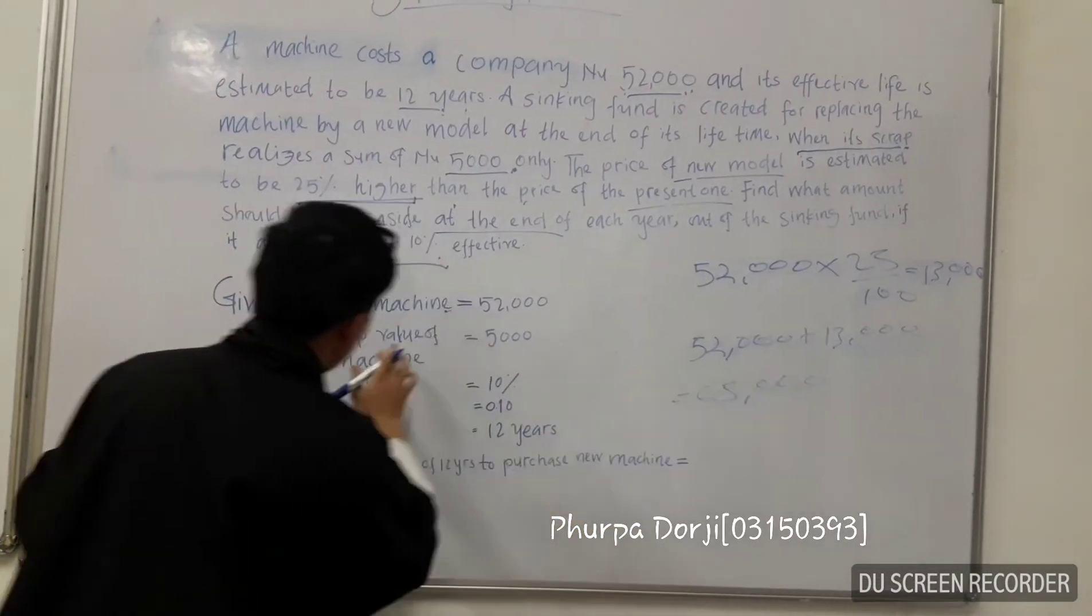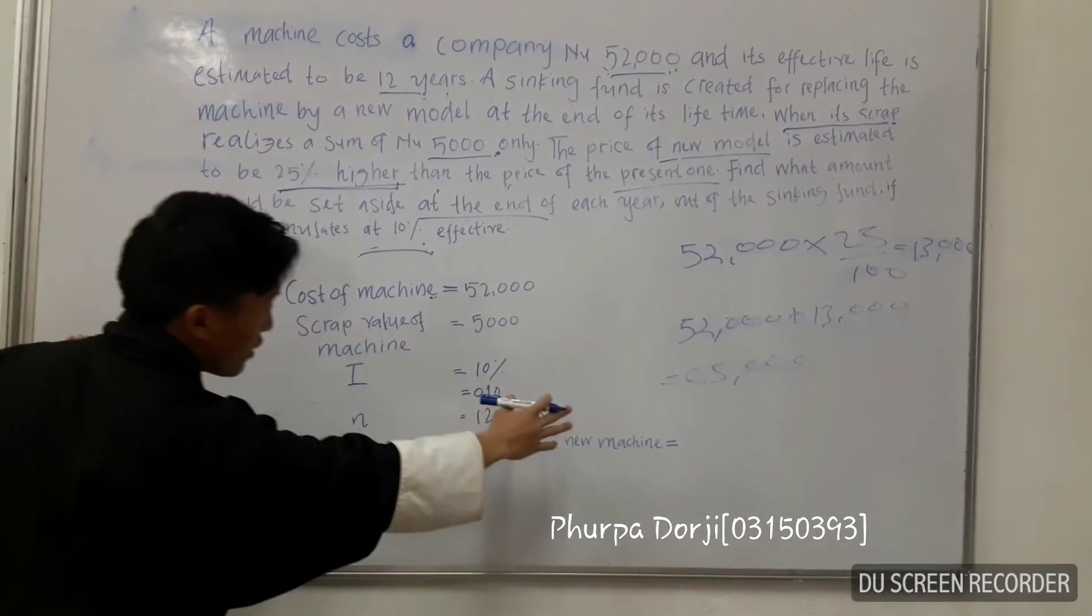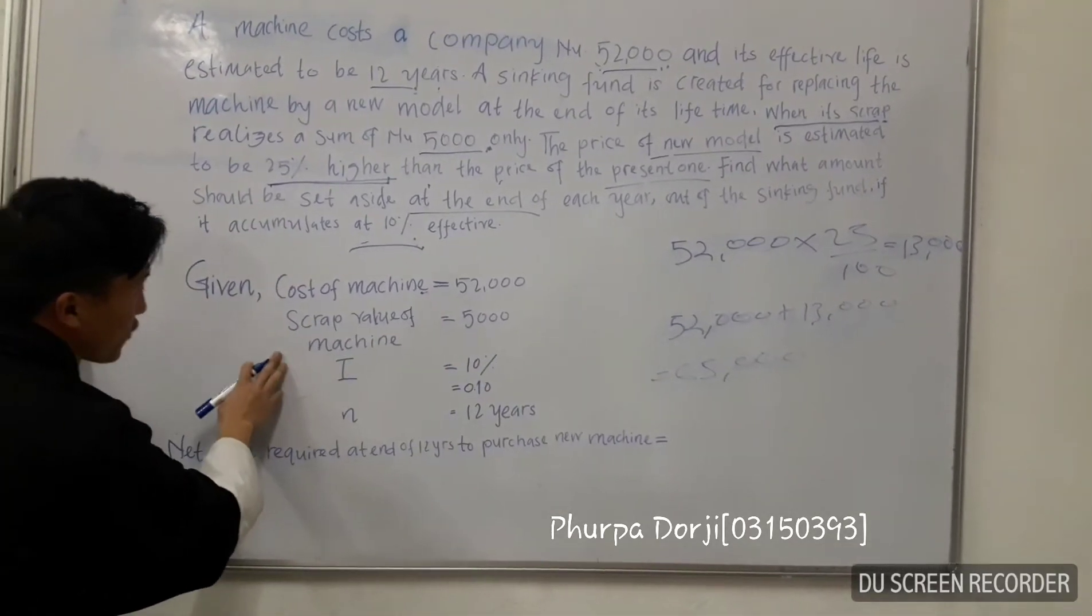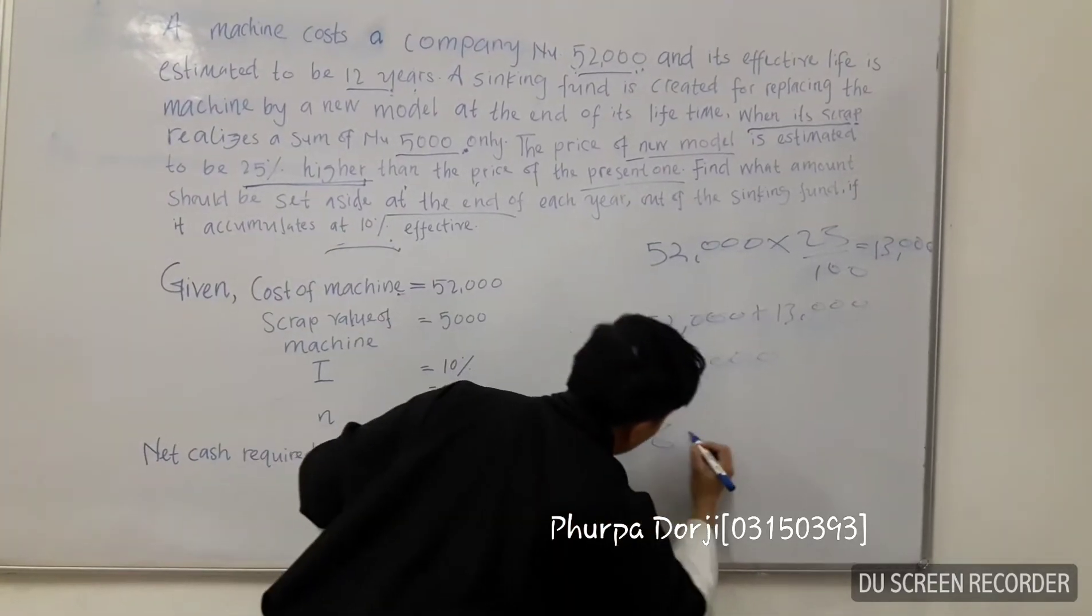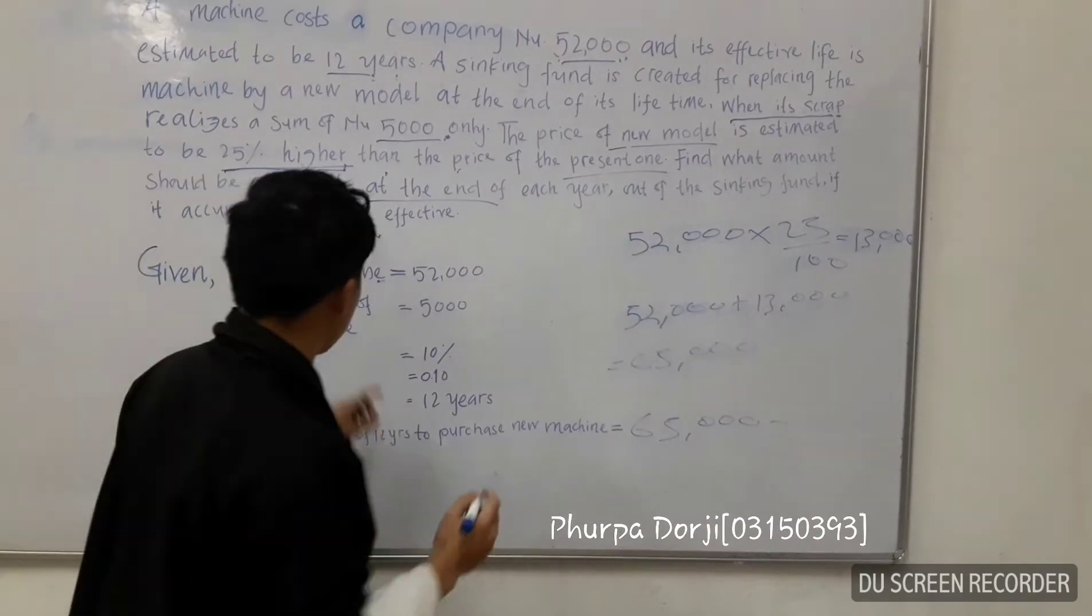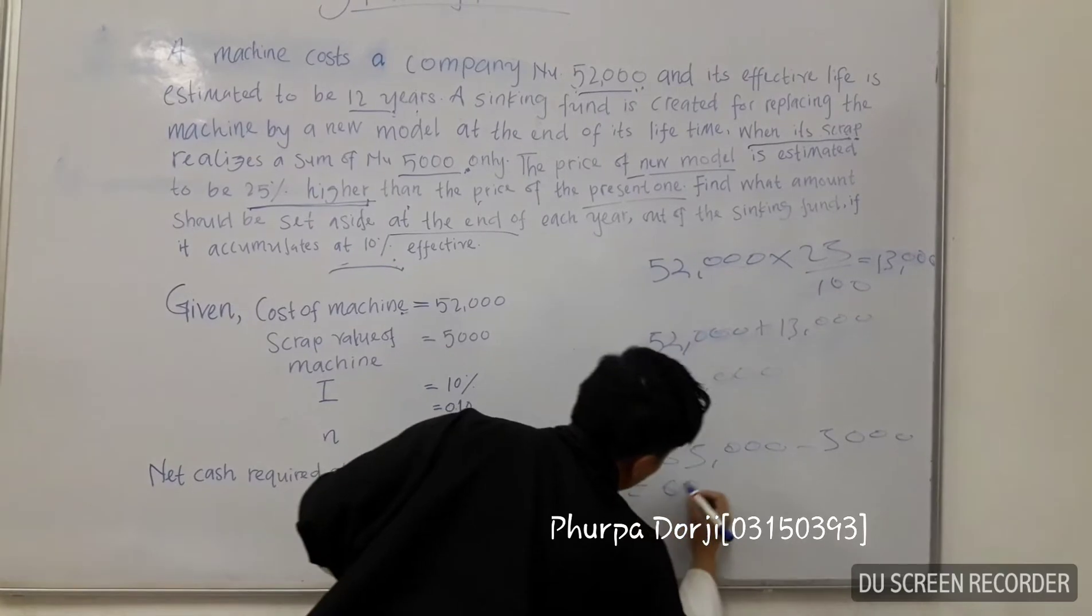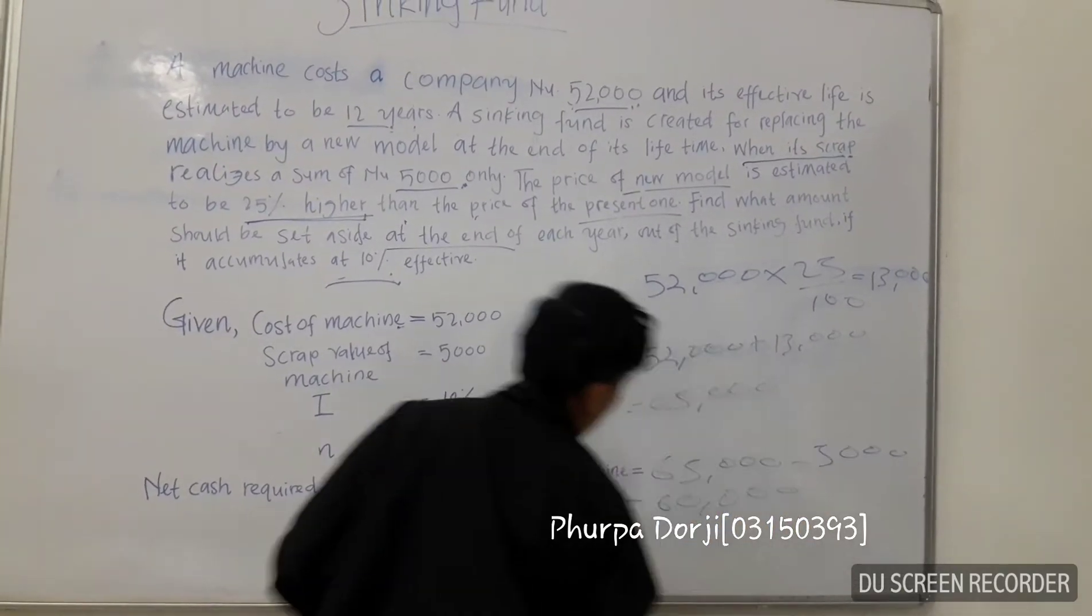In this question, the extra information given is the scrap value. With that amount, we have to subtract this scrap value. So 65,000 minus the scrap value, that is 5,000, equals 60,000, which will be the total cost of the machine.